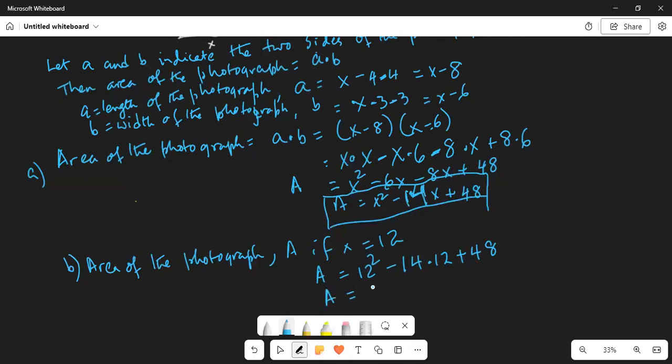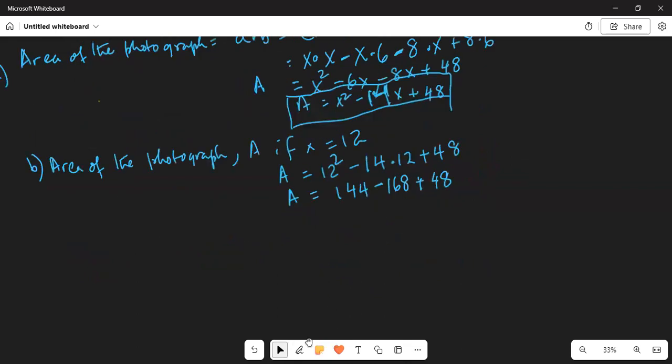So a is equal to 12 times 12 is 144 minus 14 times 12, you can use your calculator, 14 multiplied by 12 is 168, minus 168 plus 48. If I further create some more space, so area is equal to 144 plus 48 is 192 minus 168, which is equal to 24 square inches. That's your answer for part b.